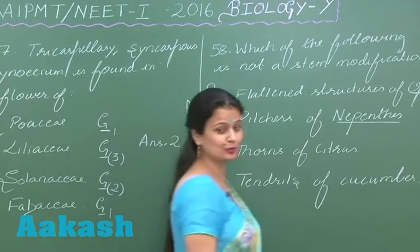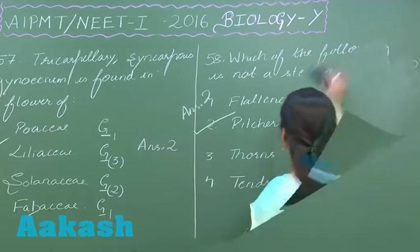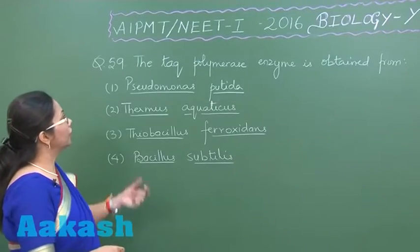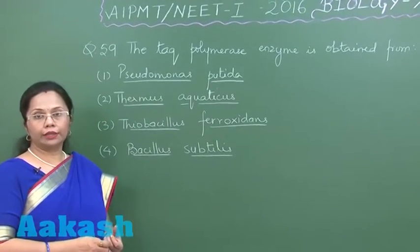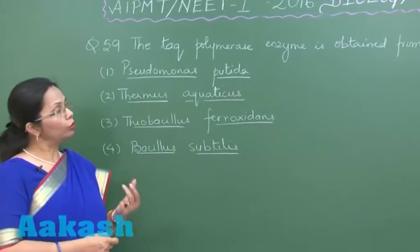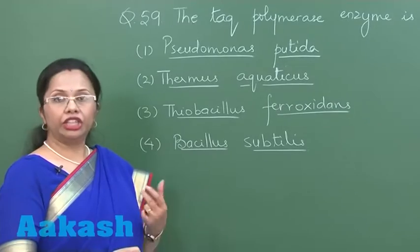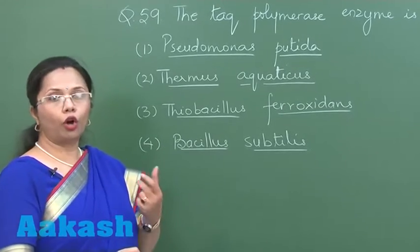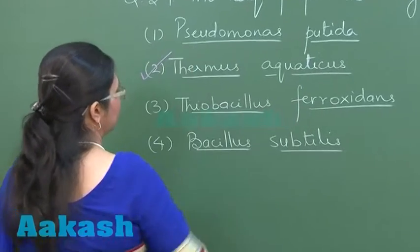So now let's discuss next question, that is 59. Now in this question, the Taq polymerase enzyme which is an important enzyme for PCR because it is able to duplicate DNA in denaturing condition.